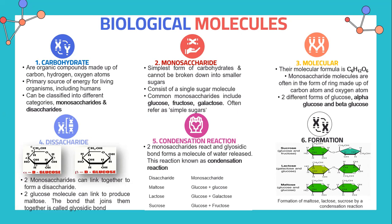Monosaccharides are the simplest form of carbohydrate and cannot be broken down into smaller sugars. They consist of a single sugar molecule. Common monosaccharides include glucose, fructose, and galactose, often referred to as simple sugars.